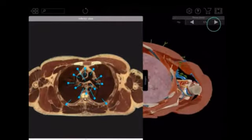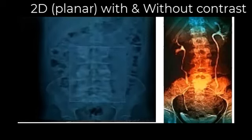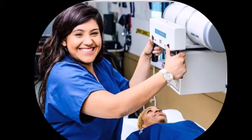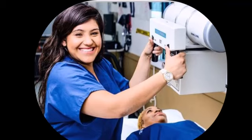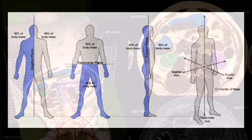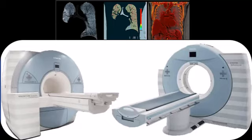To appreciate the significance of cross-sectional anatomy, it is important to understand its historical context. Traditionally, radiographers relied on two-dimensional imaging techniques such as X-rays to visualize internal structures of the body. However, with the advent of advanced imaging modalities like CT and MRI, the ability to view the body in cross-sections has revolutionized the field. This shift has necessitated a deeper understanding of anatomy in three dimensions, making it a critical skill for modern radiographers. The introduction of high-resolution CT and MRI scanners has provided unprecedented detail and clarity in cross-sectional images.